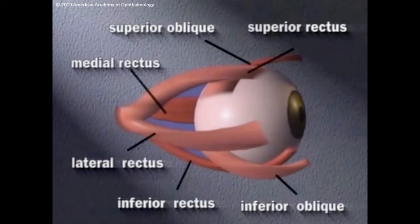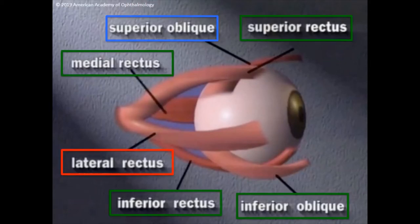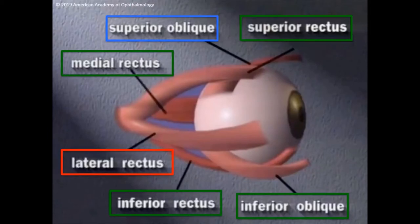The extraocular muscles that control the directional movements of the eye within the orbit include the superior, medial, lateral, and inferior rectus muscles along with the superior and inferior oblique muscles. Of these muscles, all are innervated by cranial nerve 3, also known as the oculomotor nerve, as highlighted in green, except for the lateral rectus and superior oblique muscles, as shown in red and blue, respectively. The lateral rectus is innervated by cranial nerve 6, also known as the abducens nerve, while the superior oblique is innervated by cranial nerve 4, also known as the trochlear nerve.